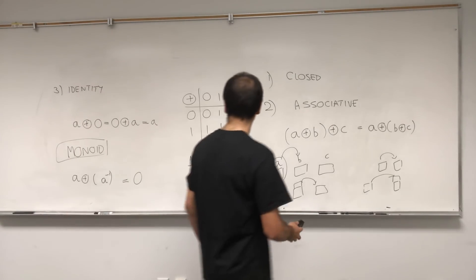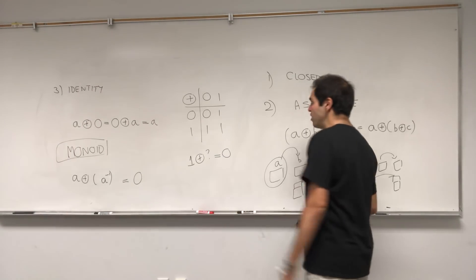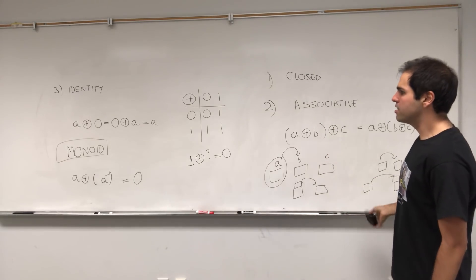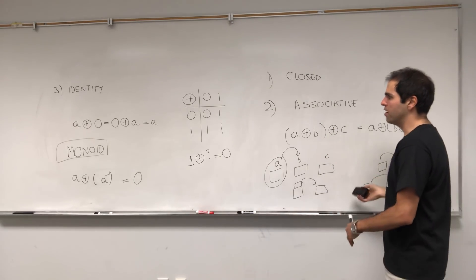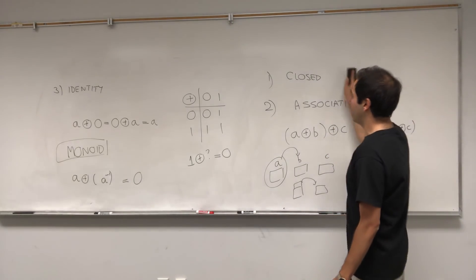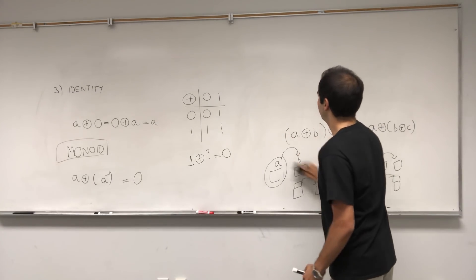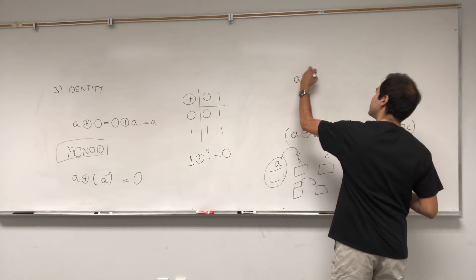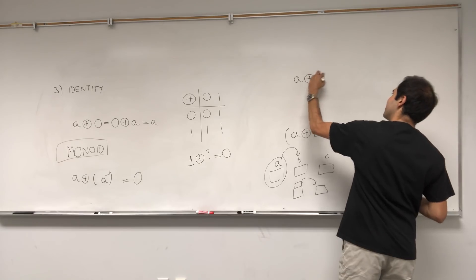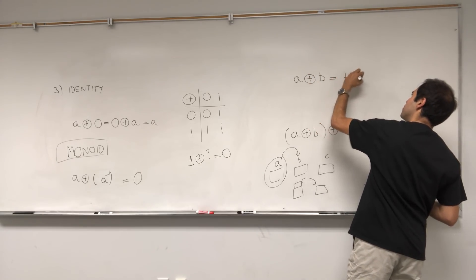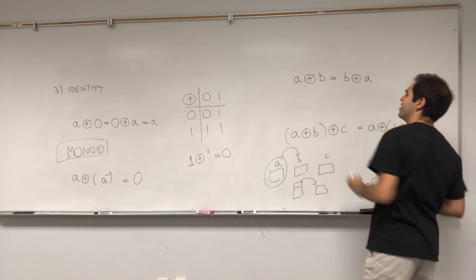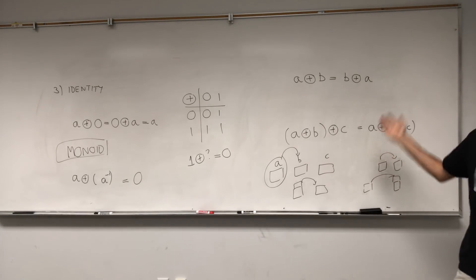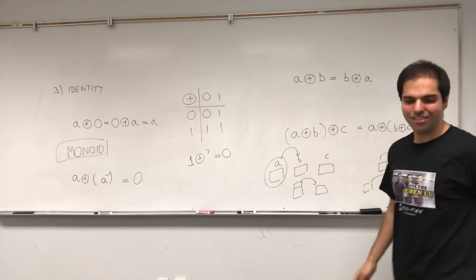Not only that, we do have another interesting property — it's what's called abelian. So A plus B equals B plus A. The order really doesn't matter in the sense that A plus B equals B plus A. Matrix multiplication wouldn't hold that, for instance.